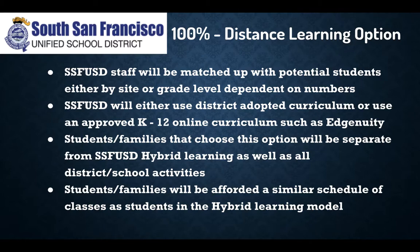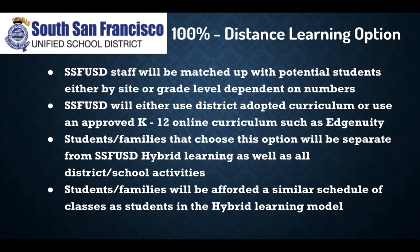We're going to match district staff with potential students — either at the site or grade level — and it will depend on numbers. The district will use district-adopted curriculum or approved K-12 online curriculum, such as Ingenuity. Students and families that choose this 100% distance learning option need to understand that they'll be separate from the district hybrid learning, as well as all district and school activities.